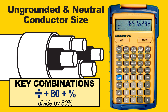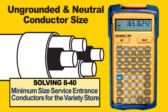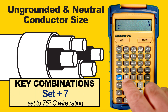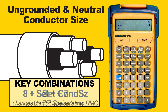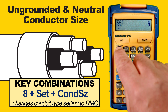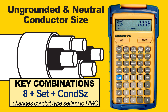That's it for number 8-39, but with just a few more keystrokes we can also solve number 8-40, which is to find the minimum size service entrance conductors for the variety store. The additional parameters given are 75 degrees C wire rating, so we press Set, then 7 — we can confirm the entry is correct in the upper left. Also, RMC conduit: referring to the conduit reference chart in the user's guide, the pocket reference, or on the back of the device's cover, we set that value by entering 8, pressing Set, then pressing Conduit. We now see RMC on the display.